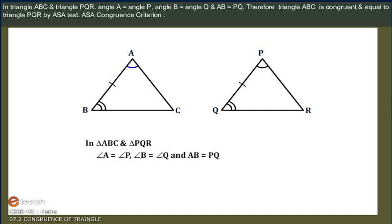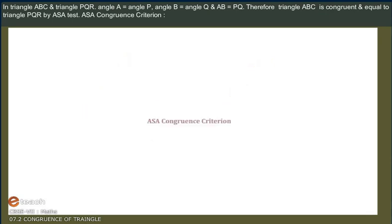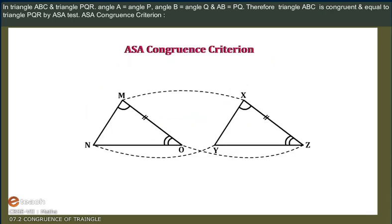In Triangle ABC and Triangle PQR, Angle A is equal to Angle P, Angle B is equal to Angle Q, and AB is equal to PQ. Therefore, Triangle ABC is congruent to Triangle PQR by the Angle-Side-Angle test.